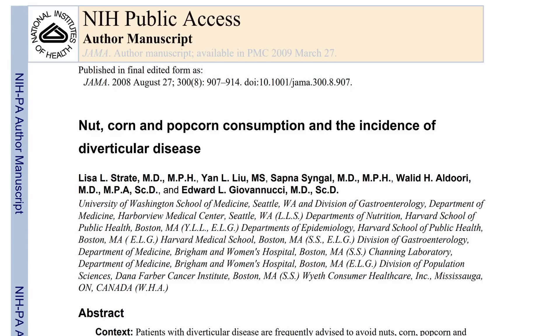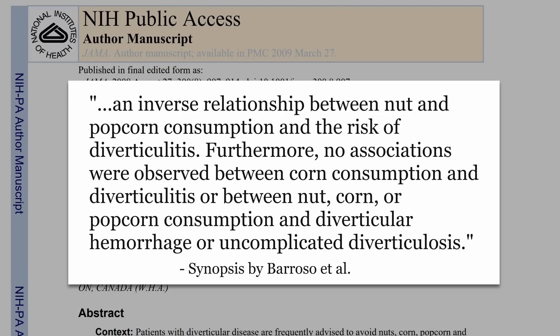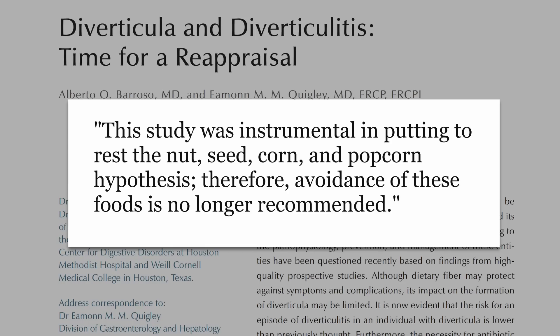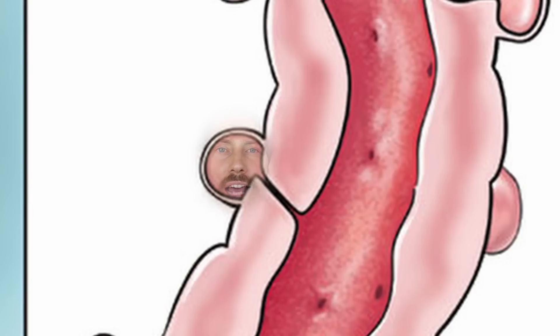People who already have diverticulosis have often been told to stay away from nuts and seeds that could get stuck and irritate the pouches. What does the science say? A study that followed middle-aged men for 20 years found an inverse relationship between nut and popcorn consumption and the risk of diverticulitis. They say this study was instrumental in putting to rest the nut, seed, corn, and popcorn hypothesis — avoidance of these foods is no longer recommended. That makes sense because the very fiber-rich foods associated with lower risk of getting these diseases and lower risk of hospitalization include nuts and seeds. Intuitively it seems like they could be a risk, but it's not showing that in the literature.